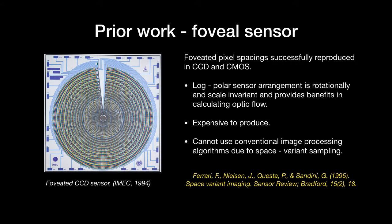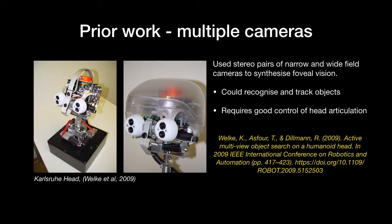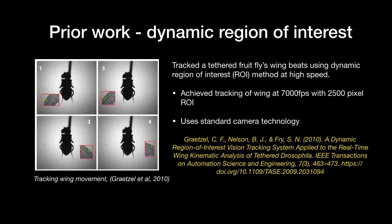People have been attempting to replicate the biological eye for many years. Some have tried to copy the sensor arrangement in silicon, while others have built systems using multiple cameras. CMOS cameras allow the user to selectively read pixels in real time, enabling very high frame rates to be read from a standard sensor.